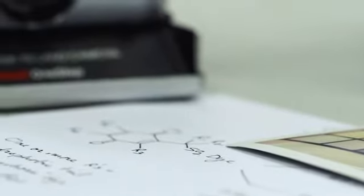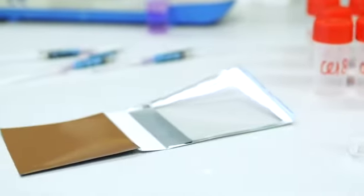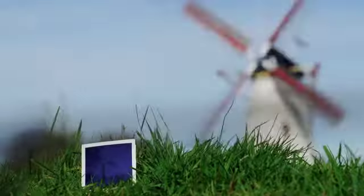Polaroid instant film and the Impossible instant film are the world's most chemically complex man-made things. When a picture is developing and you have the simple joy of watching it develop, there are literally hundreds of chemical reactions that are happening.